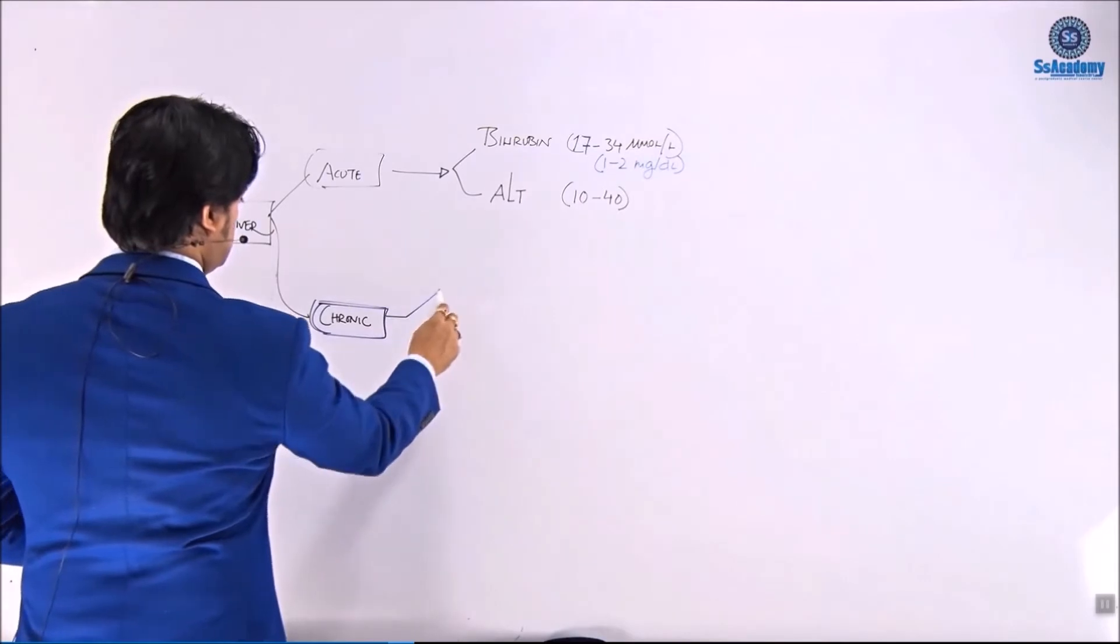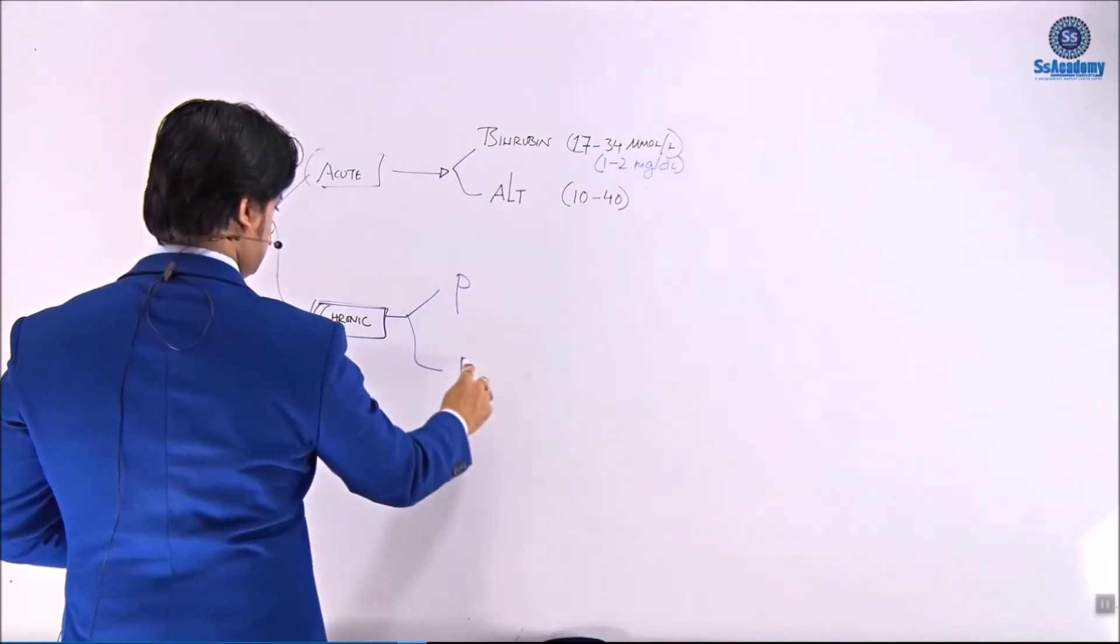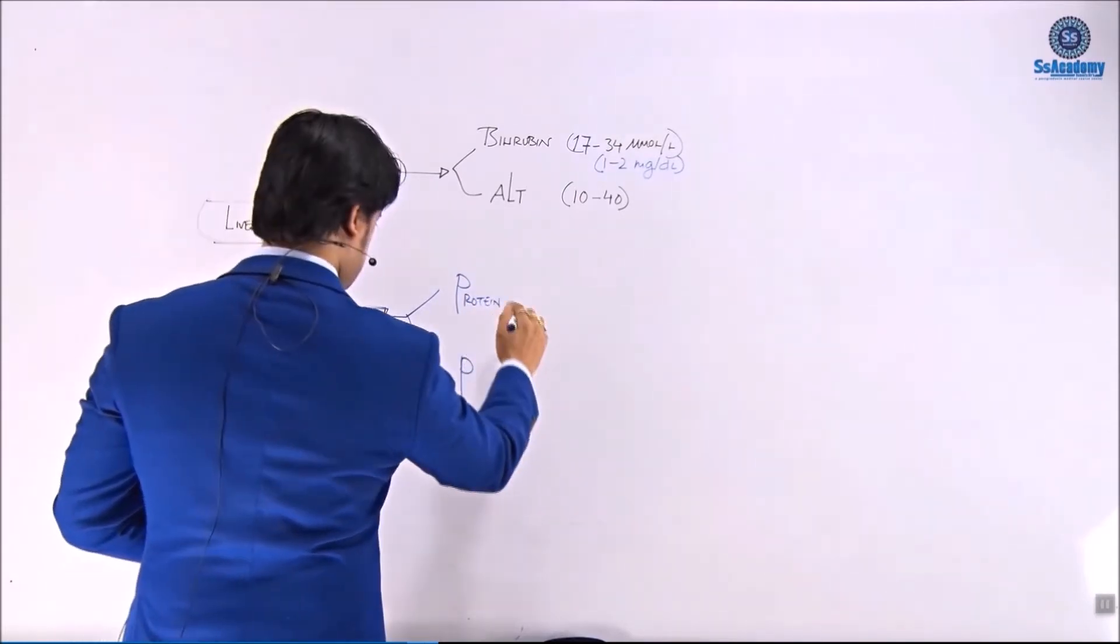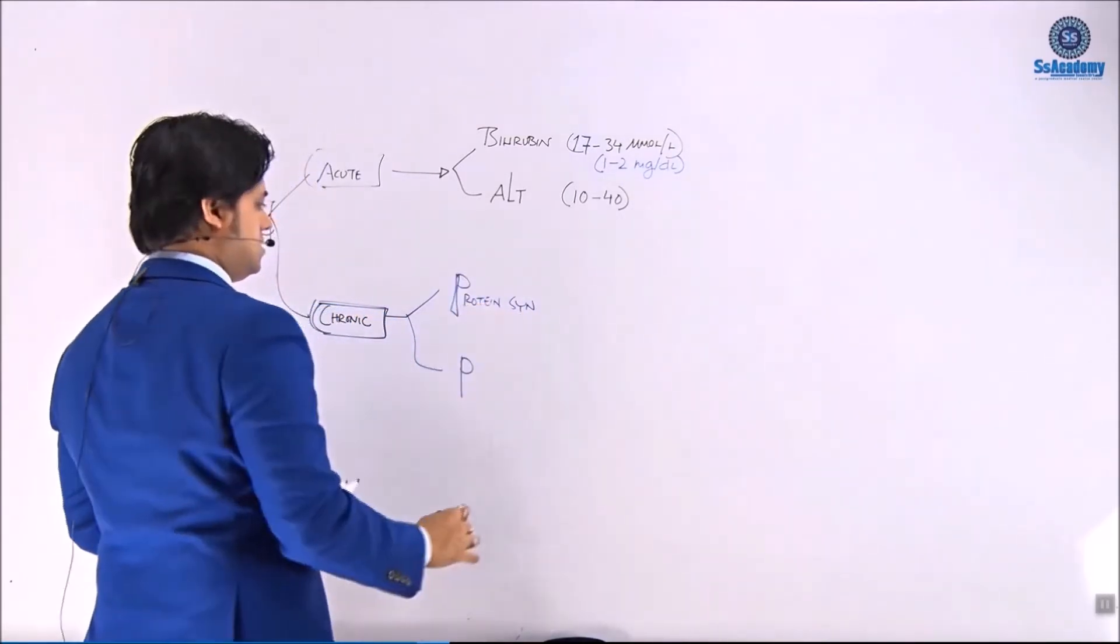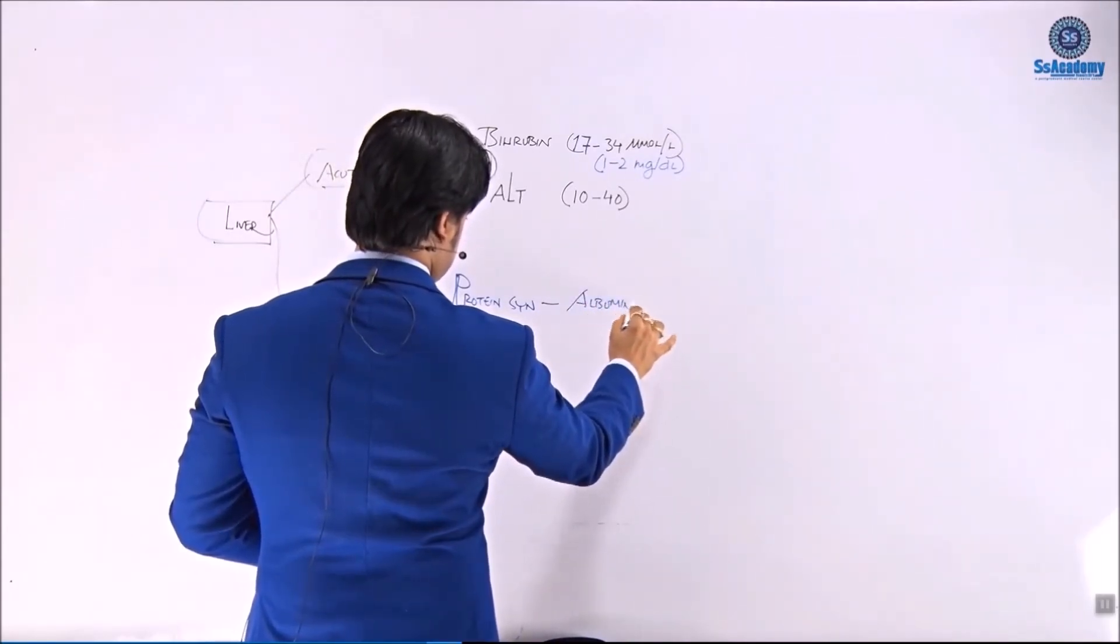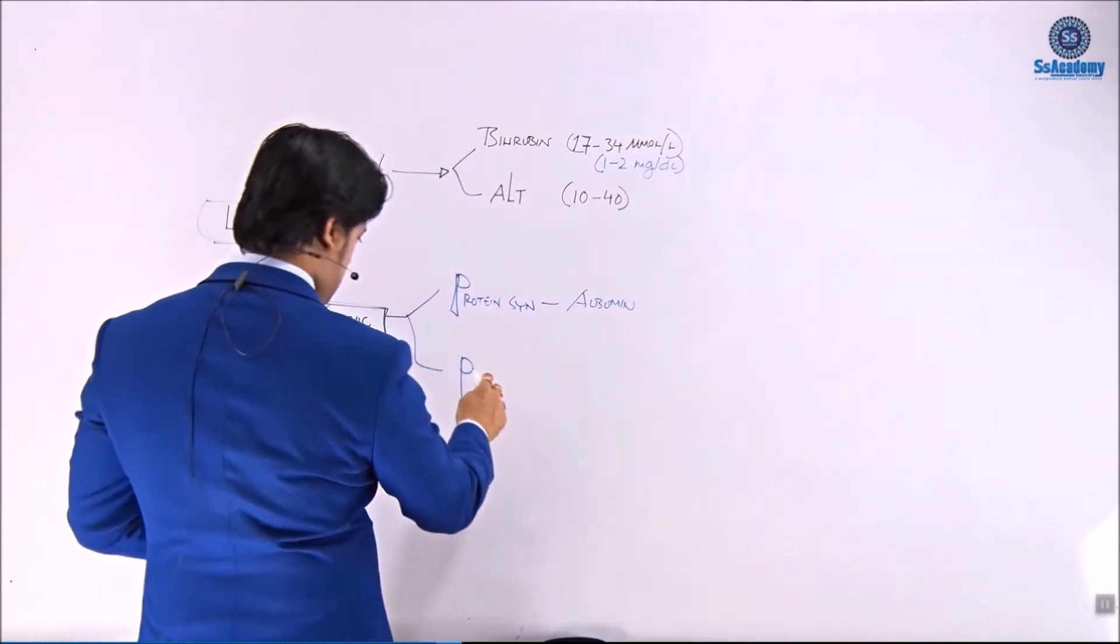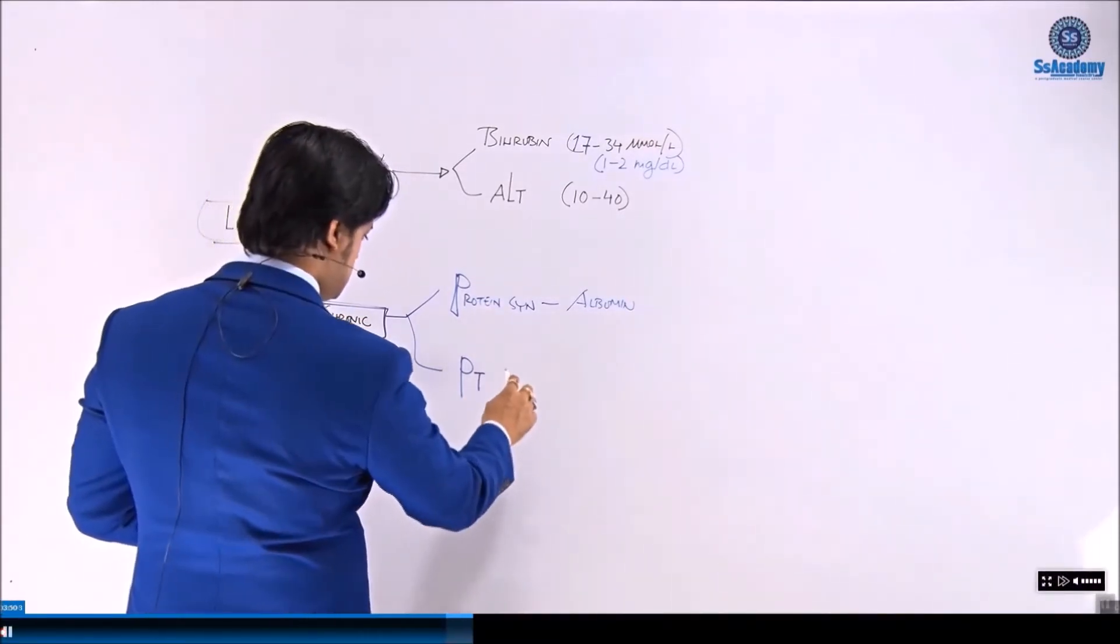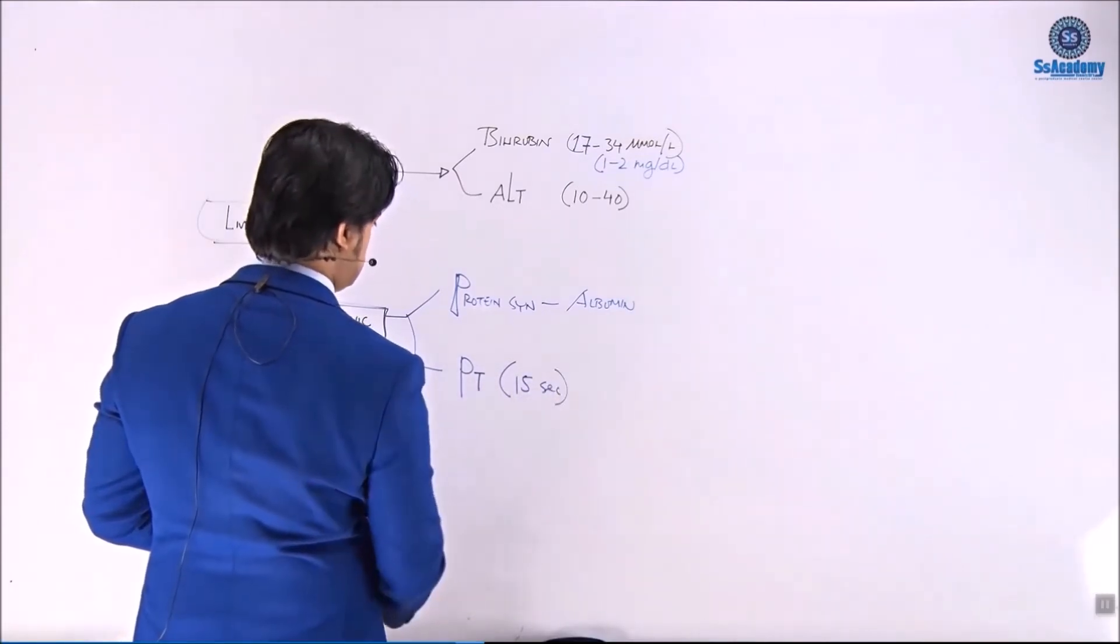Liver chronically producing means for a long time liver producing the two P functions I am saying. P means the protein production means the protein synthesis. The most important part of the protein is albumin. And next P stands for the prothrombin time maintaining the prothrombin time within 15 seconds.